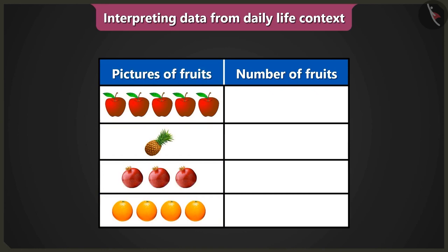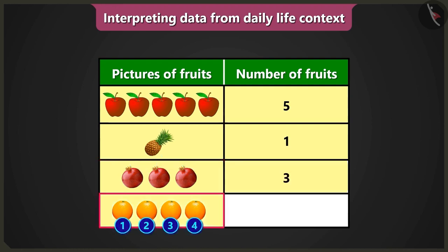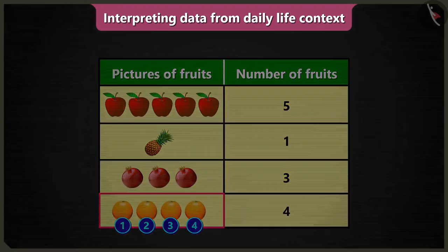But how will I know the number of fruits without counting them? It is easy. How many pictures of apples are given in this table? There are five pictures of apples. So we have to write the number of apples — five — in the column of number of fruits. Similarly, there is one picture of pineapple, so we write one. There are three pictures of pomegranate, so we write three. There are four pictures of oranges, so we write four in the column of number of fruits.